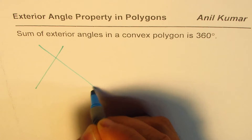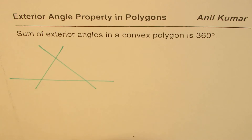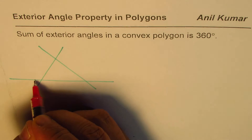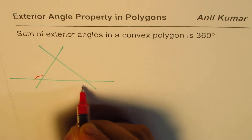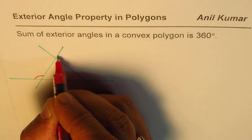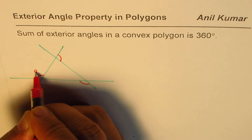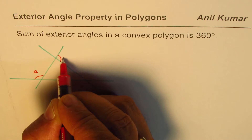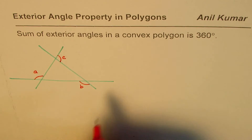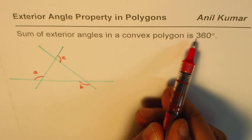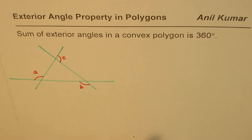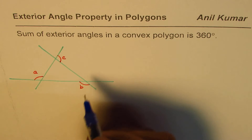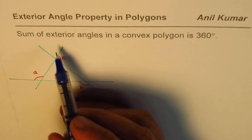Let's begin with a triangle. I'm just sketching a triangle. When we say exterior angles, these are the three exterior angles — let me call them A, B, and C. We need to prove that this sum is always 360 degrees.